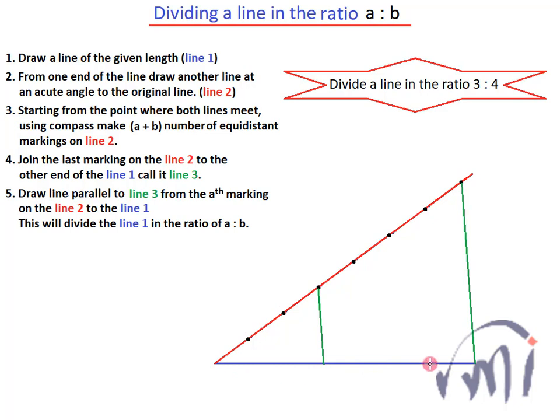It is based on the basic proportionality theorem in which in a triangle if you draw a line from one point of a side parallel to the second line, then this newly drawn line meets at a certain point of the third line. That point will actually divide that third line in the same ratio in which the first line was divided.